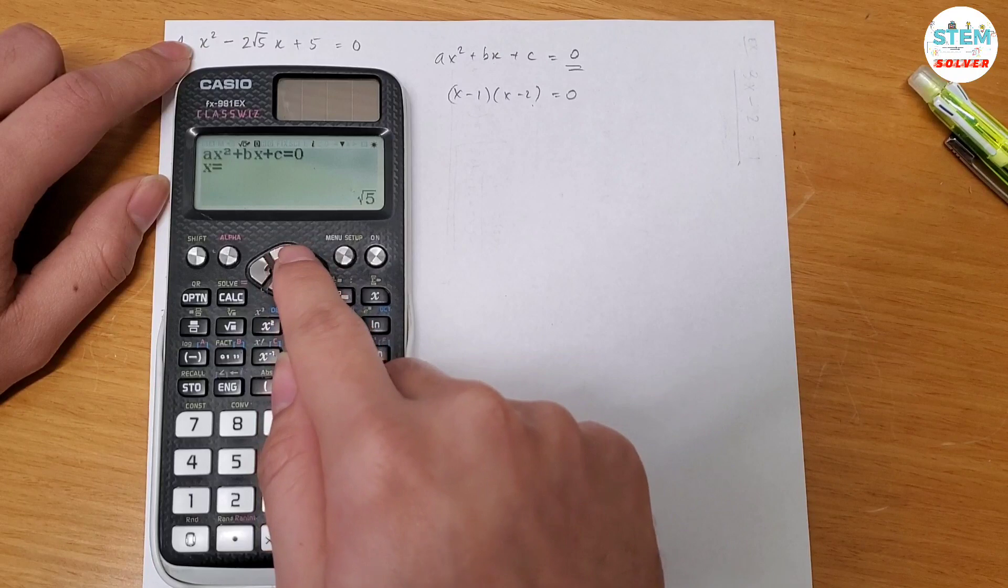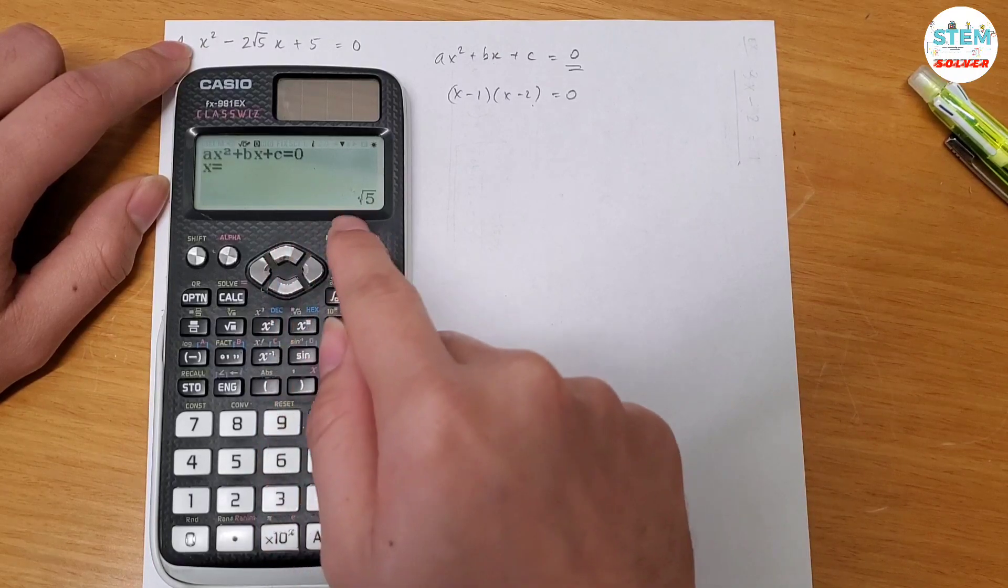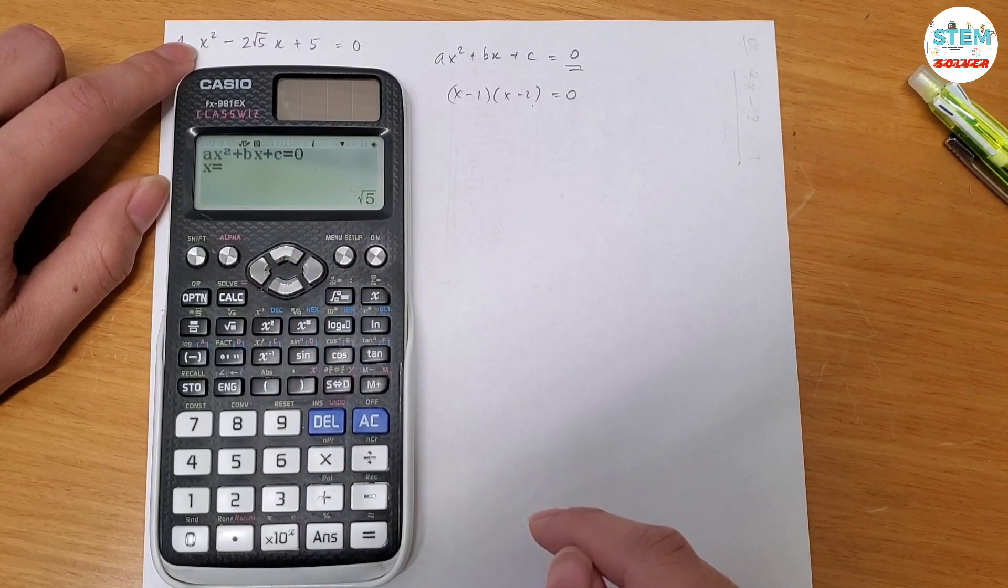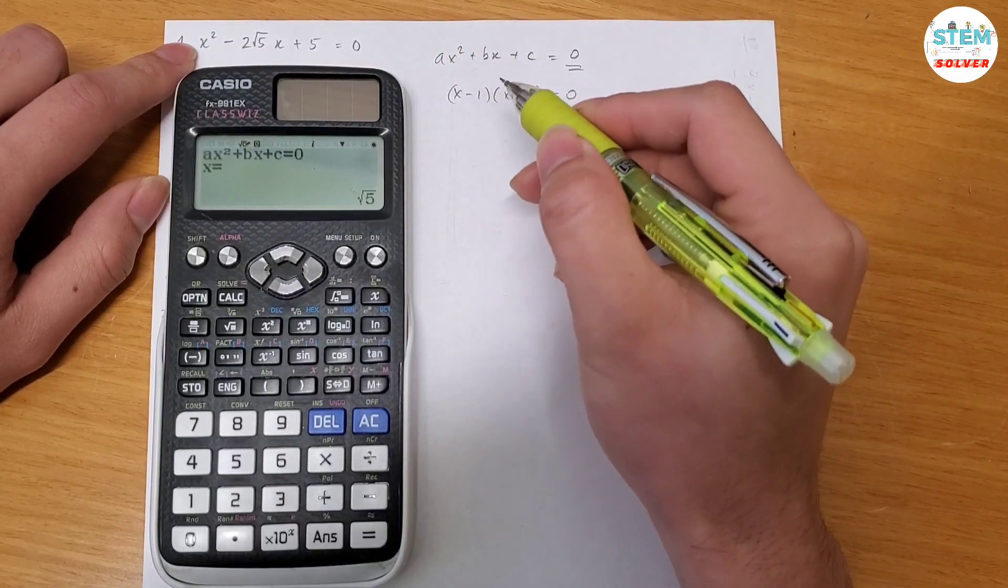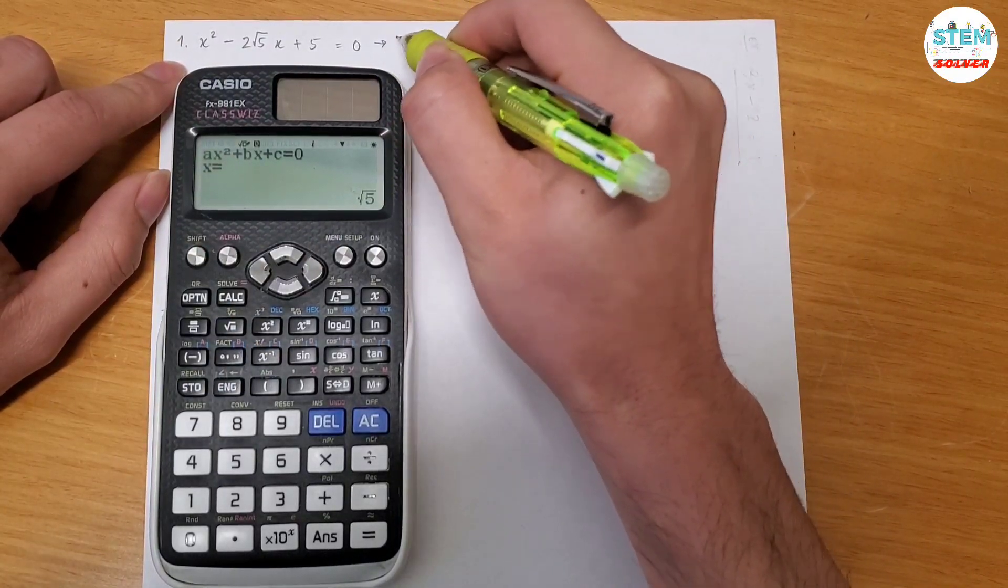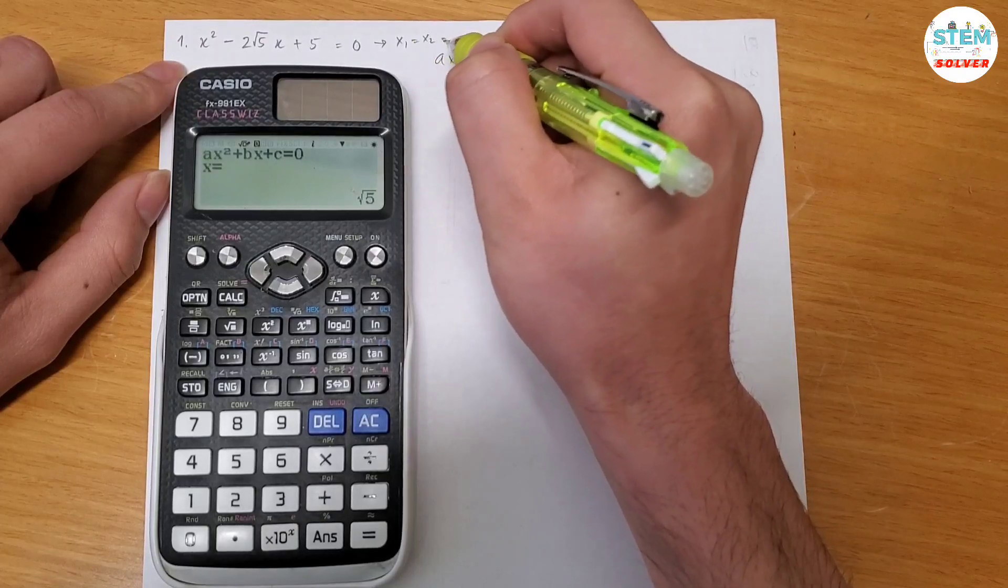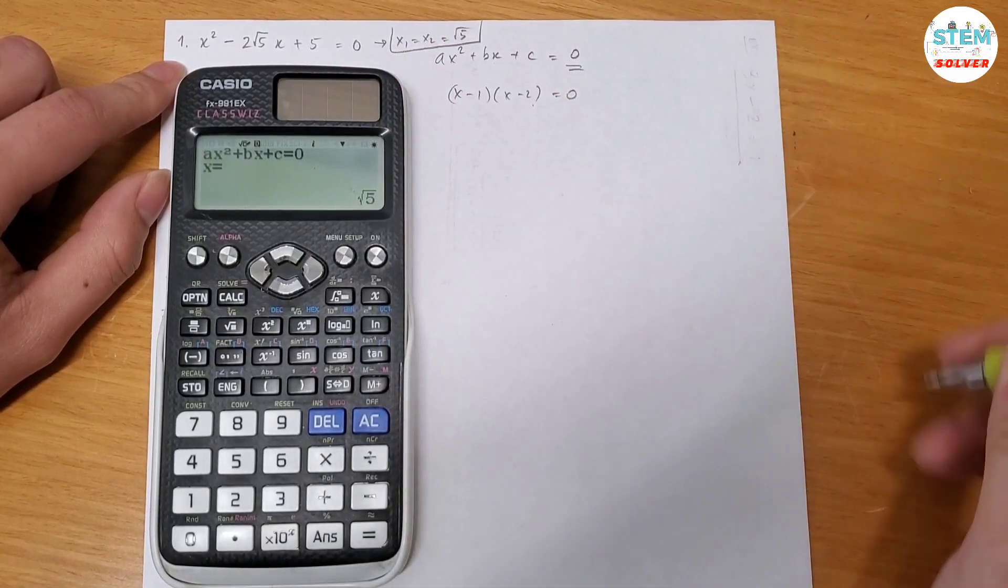But this calculator shows you only 1, so what does that mean? That means that x1 is equal to x2. This means that x1 = x2 = √5. So the solution is x1 = x2 = √5, okay?